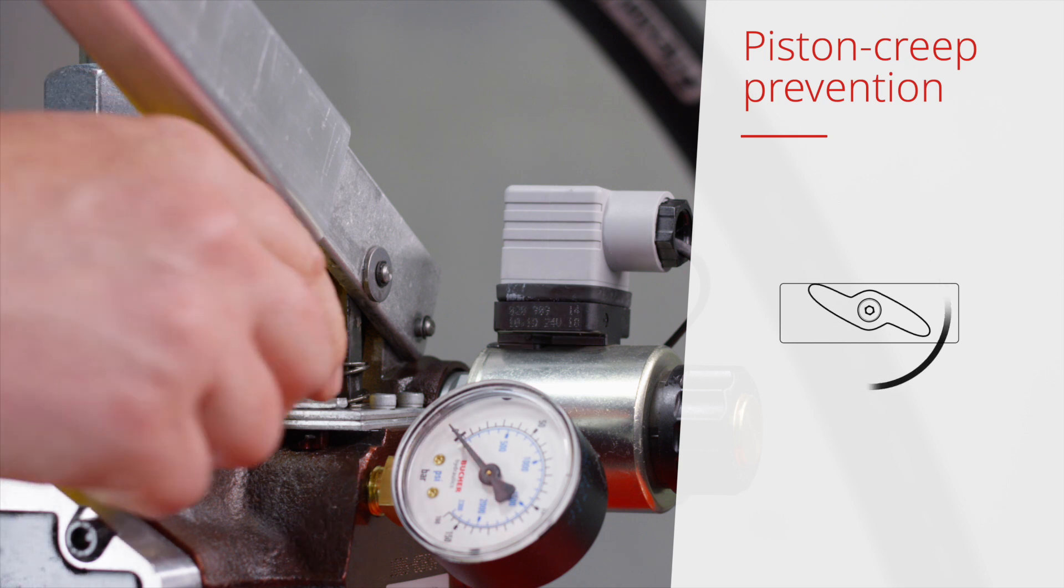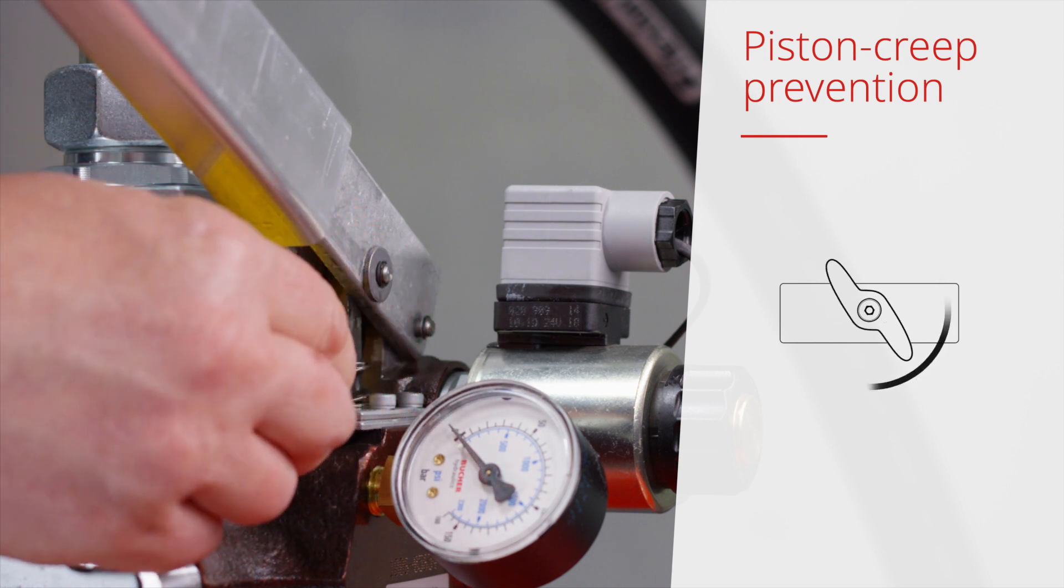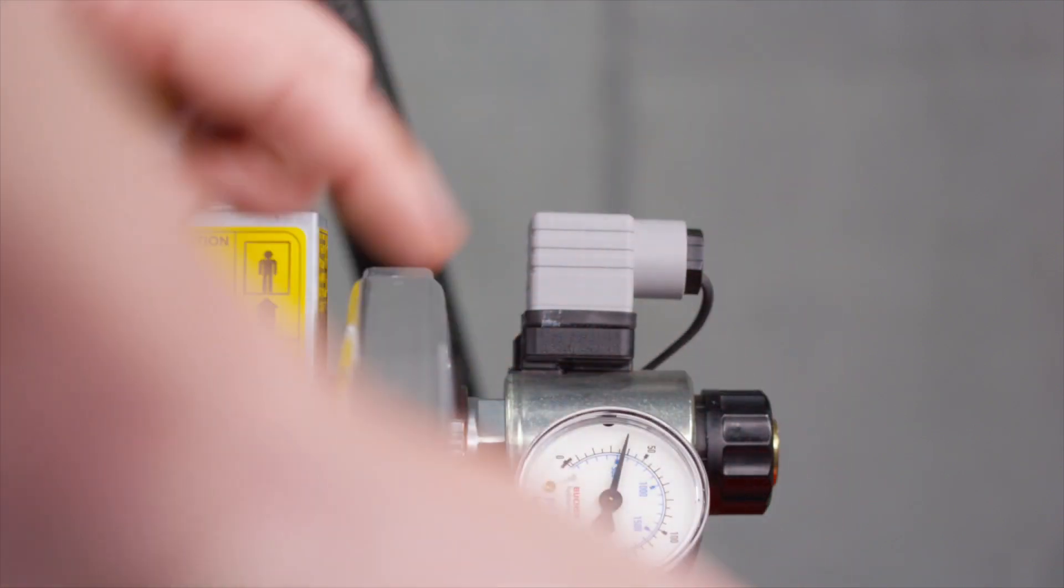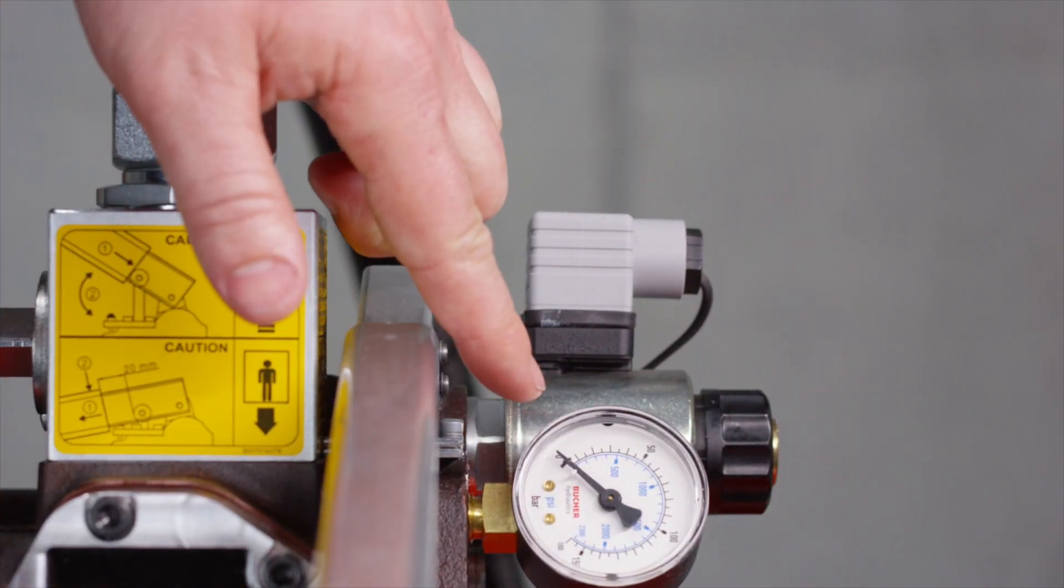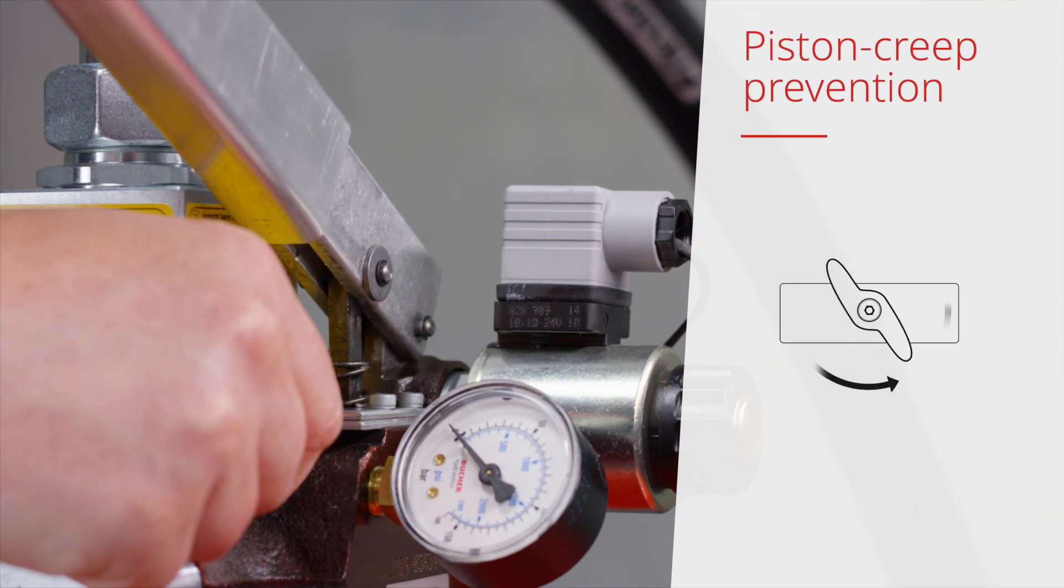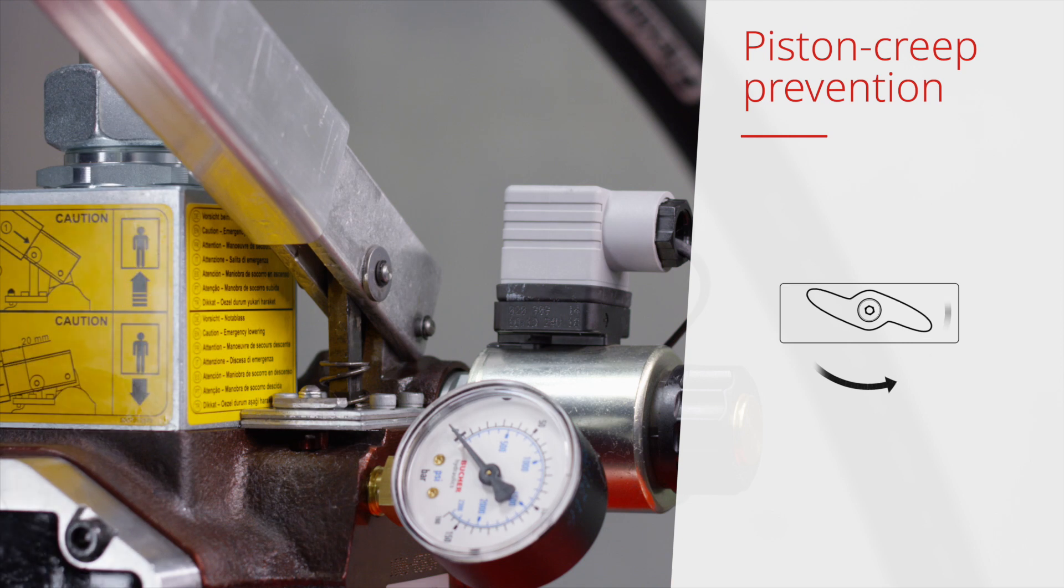Turn the piston creep preventer clockwise through 90 degrees. Push the hand pump handle down until the pressure is completely relieved. Turn the slack rope safety device counterclockwise to the original position.